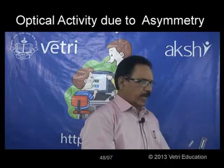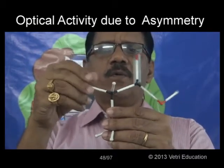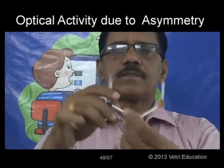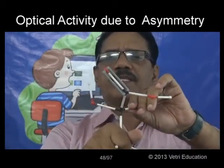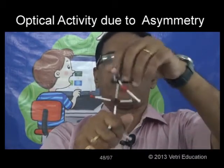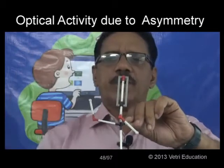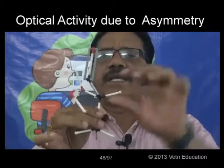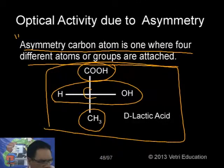In D-lactic acid, I am showing a model structure. On my right is OH, on my left is H, bottom is CH3, and the top is COOH. There are four different groups: OH, H, CH3, and COOH. This is why D-lactic acid is optically active - because it has an asymmetric carbon with four different groups attached.